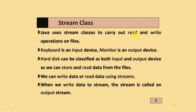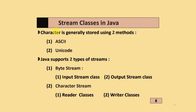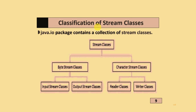Java uses stream classes to carry out read and write operations on files. The keyboard is an input device, the monitor is an output device, and the hard disk can be classified as both input and output since we can store and read data from files. We can write or read data using different streams. Java supports two types of streams: byte streams, which include InputStream and OutputStream classes, and character streams, which include Reader and Writer classes.